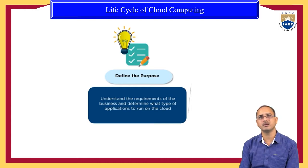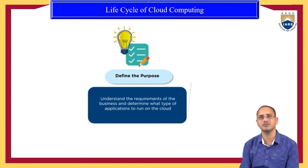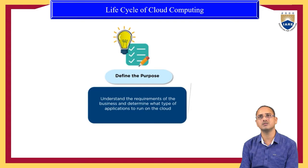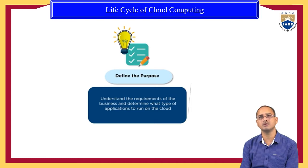Here we have the public, private, and hybrid cloud as deployment models. When it comes to service models, we have Infrastructure as a Service, Software as a Service, and Platform as a Service. We need to determine which model suits our business requirement. For any business, we need to understand what type of application to run on the cloud — based on the complexity of the application — whether to use an application as a service, deploy on a platform, or develop the application on the cloud.